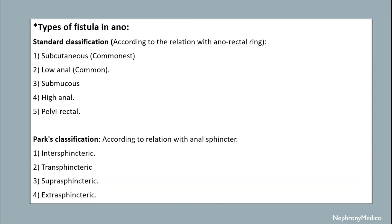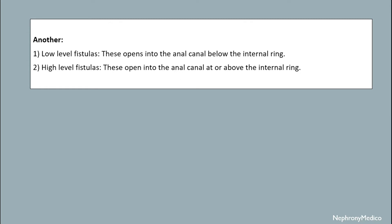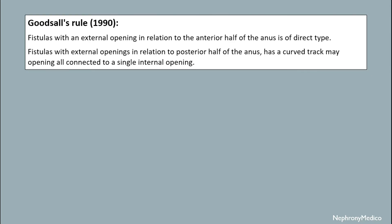The standard classification of fistula in ano is in relation to the anorectal ring, and may be subcutaneous, low anal, submucous, high anal, and pelvirectal. Parks classification is in relation to the anal sphincter: inter-sphincteric, trans-sphincteric, supra-sphincteric, and extra-sphincteric. Another classification divides them into low-level and high-level fistulas.